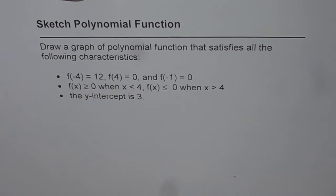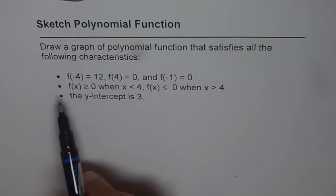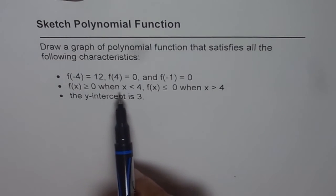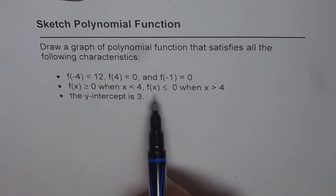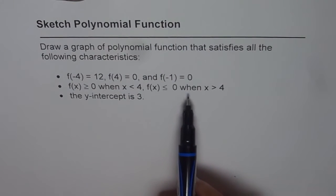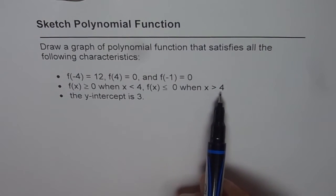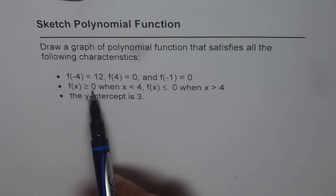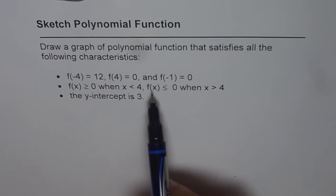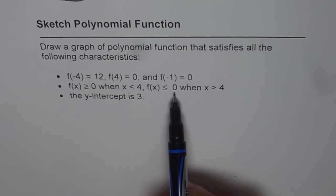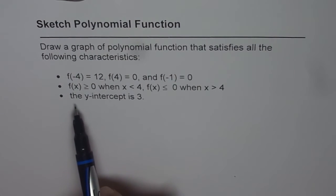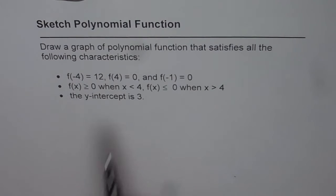So we are given some points on the graph of the polynomial function. We also have f(x) ≥ 0 when x < 4, and f(x) ≤ 0 when x > 4. Greater than or equal to 0 means the function is positive, and less than or equal to 0 means the function is negative. The last condition is that the y-intercept is 3.